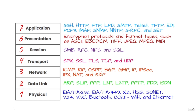In the OSI reference model, the communications between a computer system are split into seven different abstraction layers. These layers include the physical layer, the data link layer, the network layer, the transport layer, the session layer, the presentation layer, and the application layer.